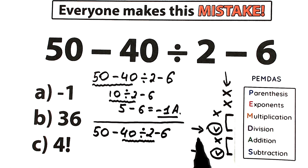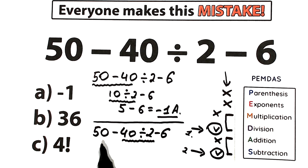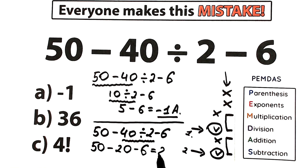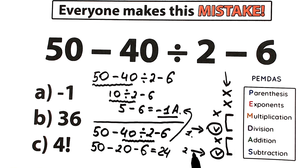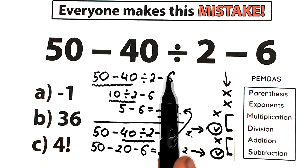So, divide first: 40 divided by 2 equals 20. Now we have 50 minus 20 minus 6, which equals 24. This is a completely different answer from minus 1. Minus 1 is absolutely wrong in terms of math because that solution performed subtraction before division, which is a very big mistake. We should divide first, then subtract from left to right.